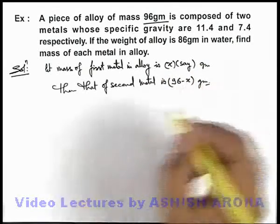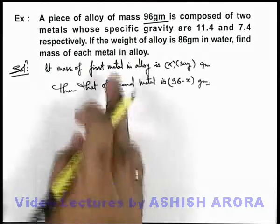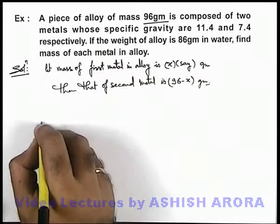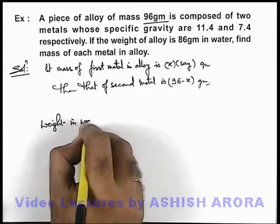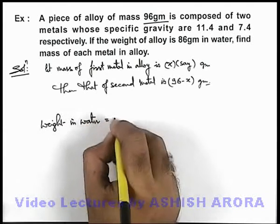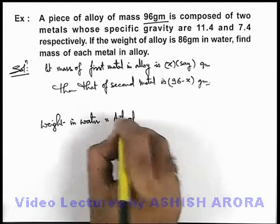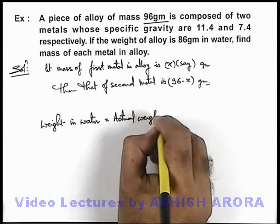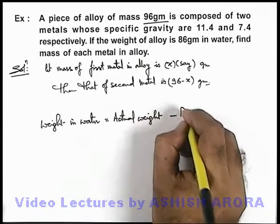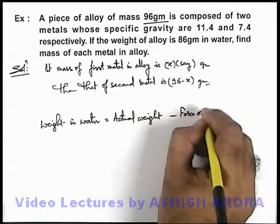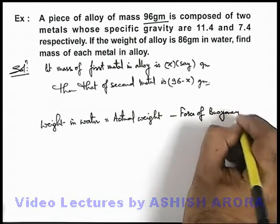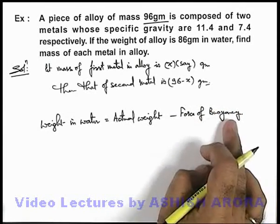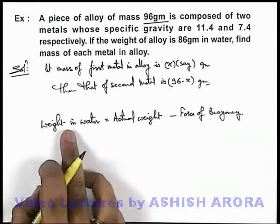When it is weighed in water, we know that weight in water can be directly written as actual weight minus force of buoyancy. Only due to the force of buoyancy the weight is reduced, what we call apparent weight.